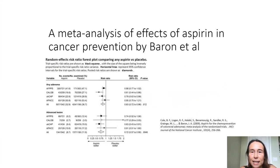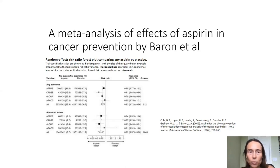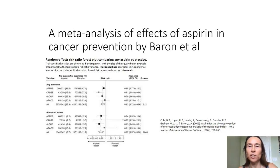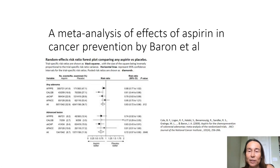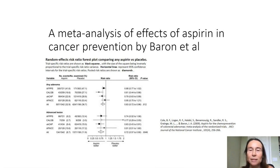The next slide presents a meta-analysis of the effects of aspirin in cancer prevention by Barron and colleagues, who compiled results from multiple research groups. The dots shown in the middle represent the relative risk of developing cancer for patients who received aspirin treatment. All those points are to the left of the vertical line at one — meaning relative risk is less than one — demonstrating reduced incidence of cancer in patients given aspirin.